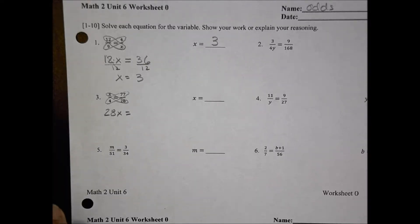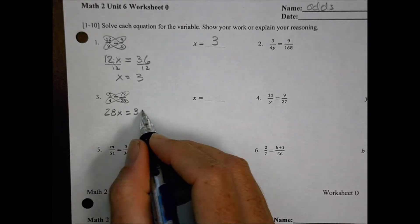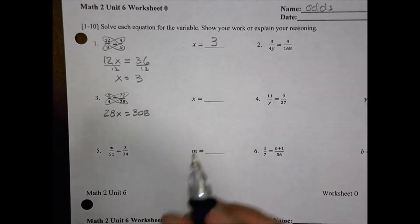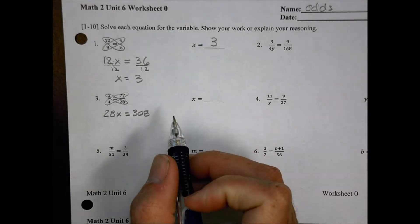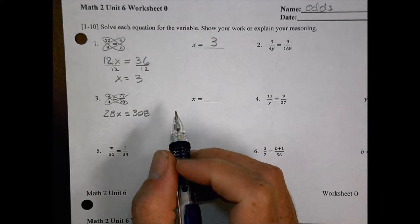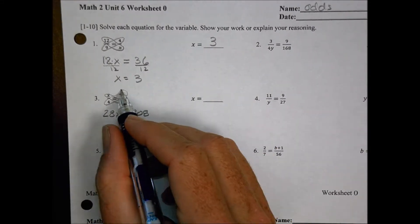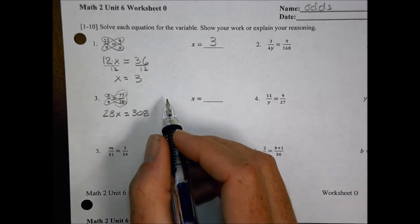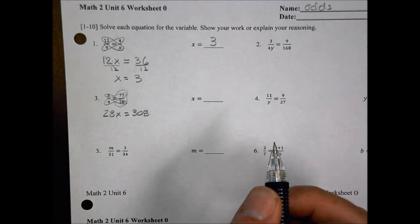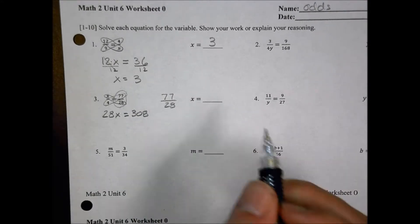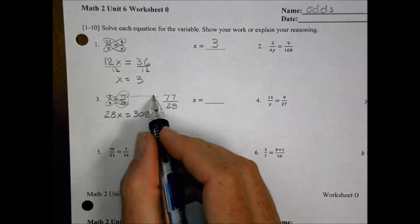And we could say 77 times 4, and it's going to be equal to 308. Okay? So that's one way we could do it. We could write it out like such. I could also, though, before I do that, I could recognize a couple things. I could multiply that out, but now I have a crazy number. I might recognize that 77 over 28, that 7 goes into both of those things there, right?